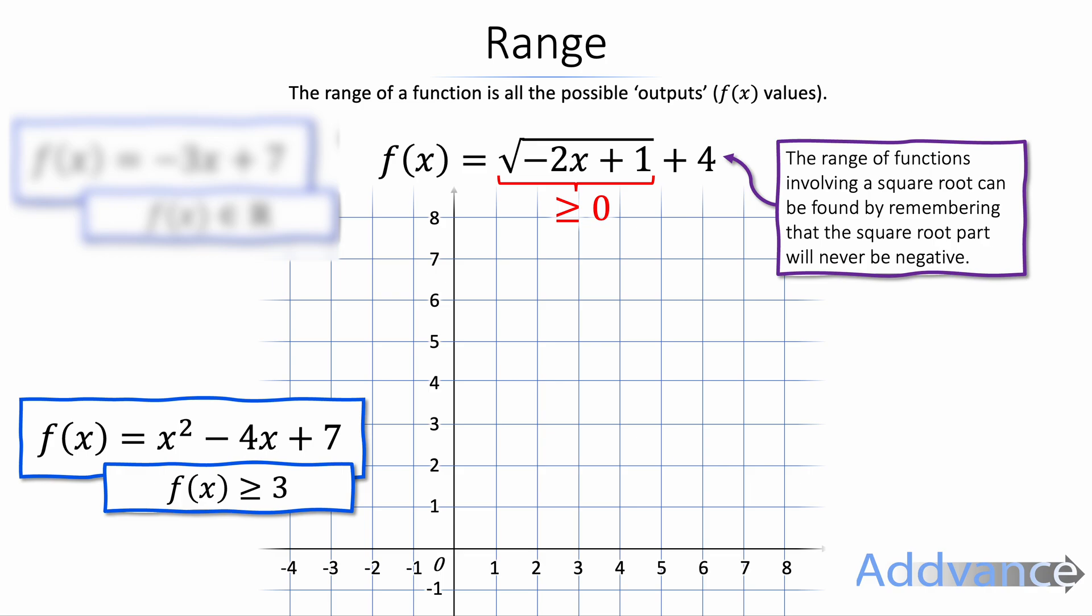Now we've got f of x equals the square root of minus 2x plus 1 plus 4. And for this the range of all functions involving a square root can be found by remembering that the square root part will never be negative. So when you square root a number you always get a positive number. So the square root part of this function will always be positive.